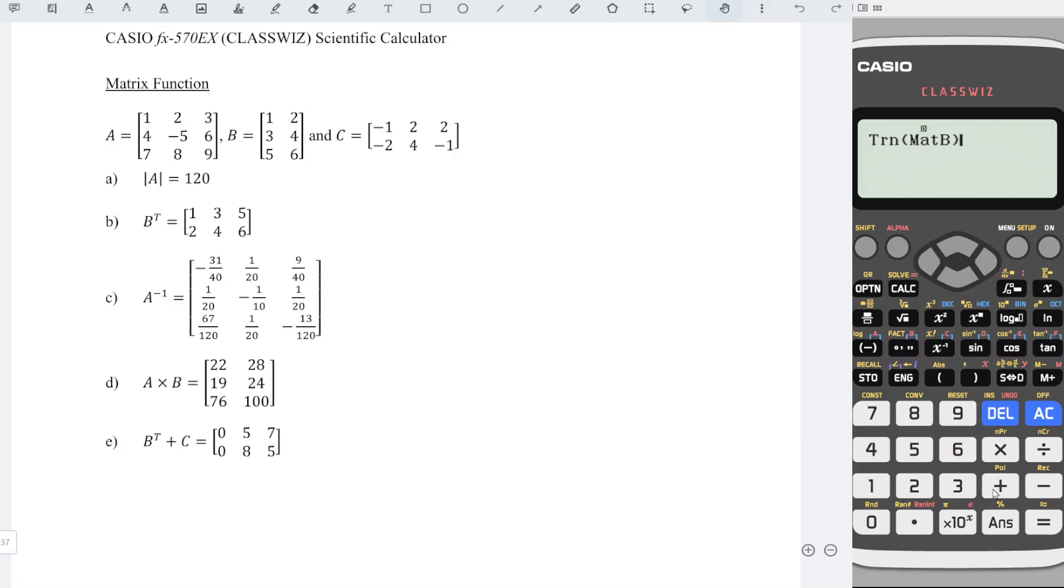Close bracket before we plus, since we have open bracket here, so we have to close bracket, plus matrix C. So option, C is 5. And we press equal. Then we will obtain the correct answer.